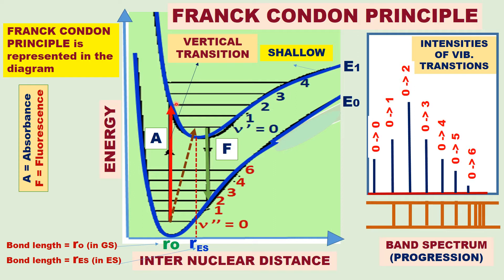This is absorbance, and this is emission. After absorbance comes emission. The absorption of light gives the absorption spectrum, and the emission of light gives the emission spectrum or fluorescence spectrum. This is fluorescence emission.